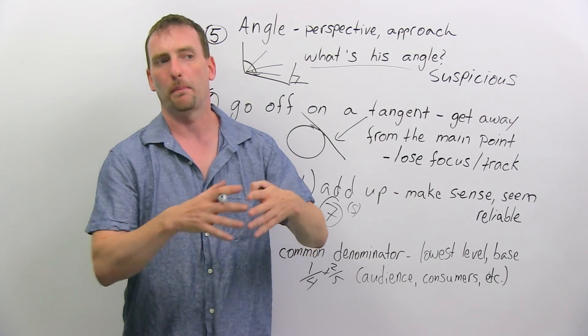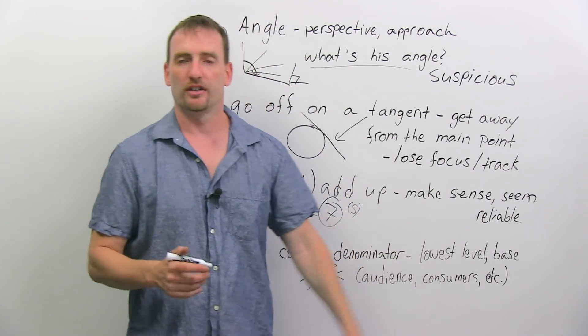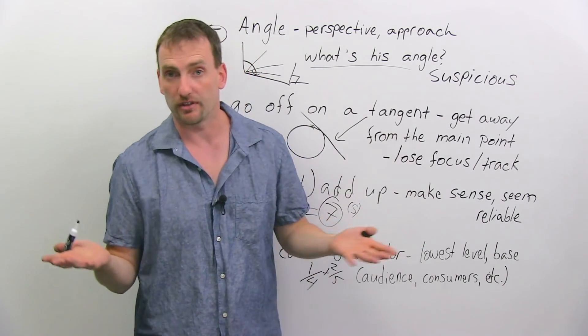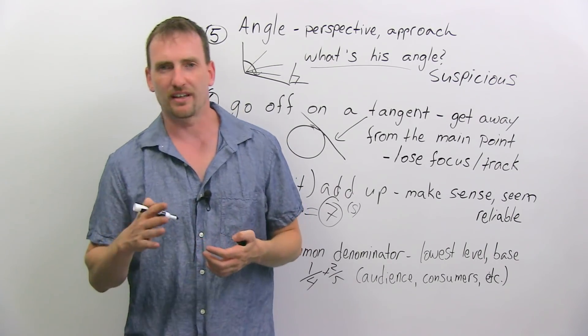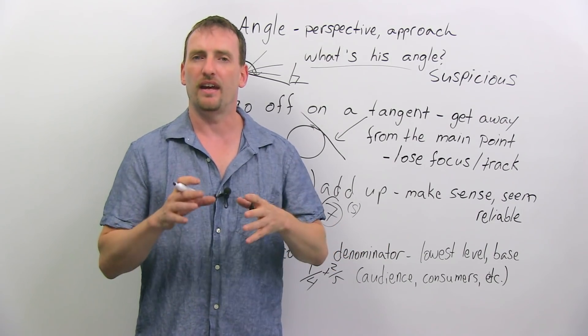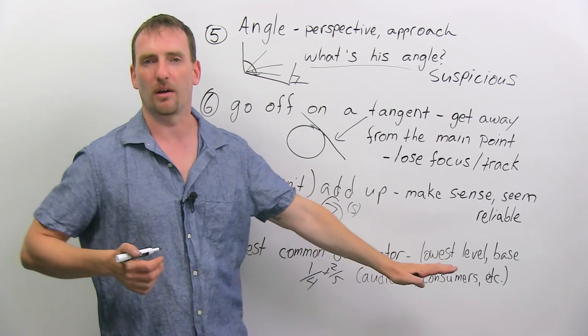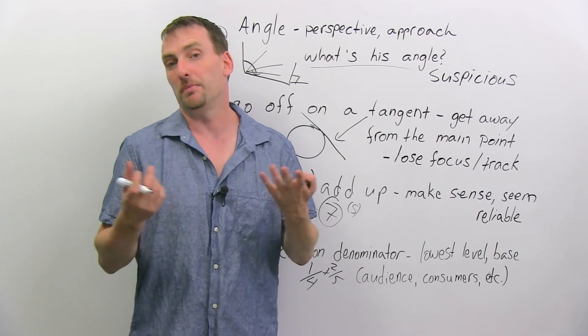Now generally when we talk about the lowest level, we mean the lowest level people. We're talking about an audience or consumers. So there are very good newspapers in this country, let's say, in Canada we have some very good newspapers, but we also have some not-so-good newspapers.